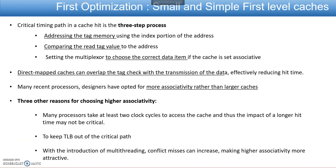The first optimization technique is small and simple first-level caches. Here 'small' refers to the size of the cache and 'simple first level' refers to the associativity level — 1-way, 2-way, 4-way, 8-way, etc. As the goal is to reduce the hit time, we need to analyze the critical timing path in a cache hit, which is a 3-step process: indexing, comparing the tag value, and setting the multiplexer to choose the correct data item.